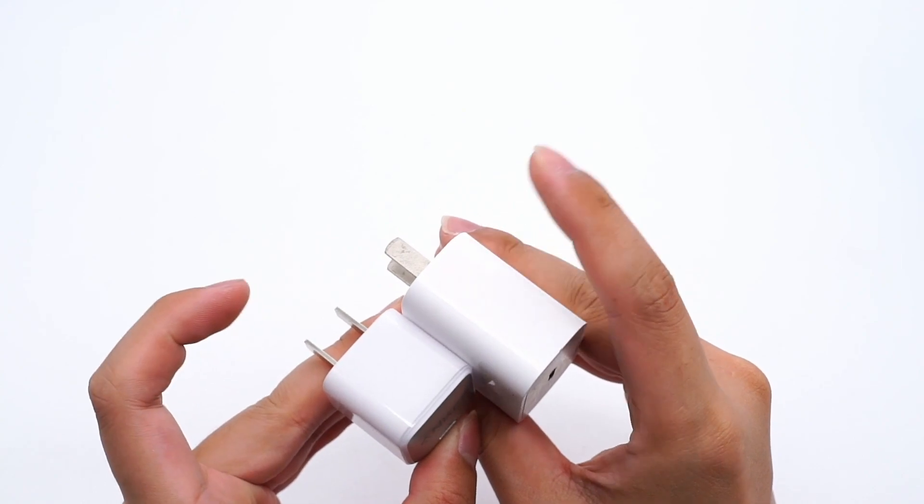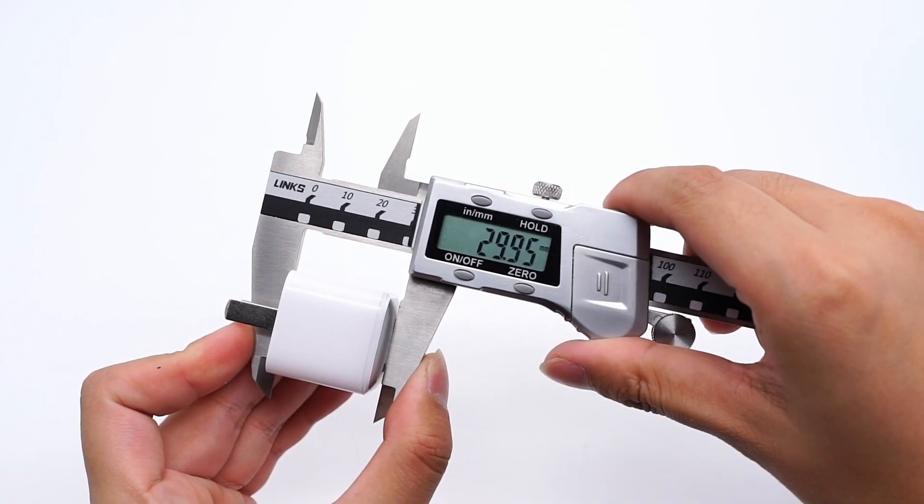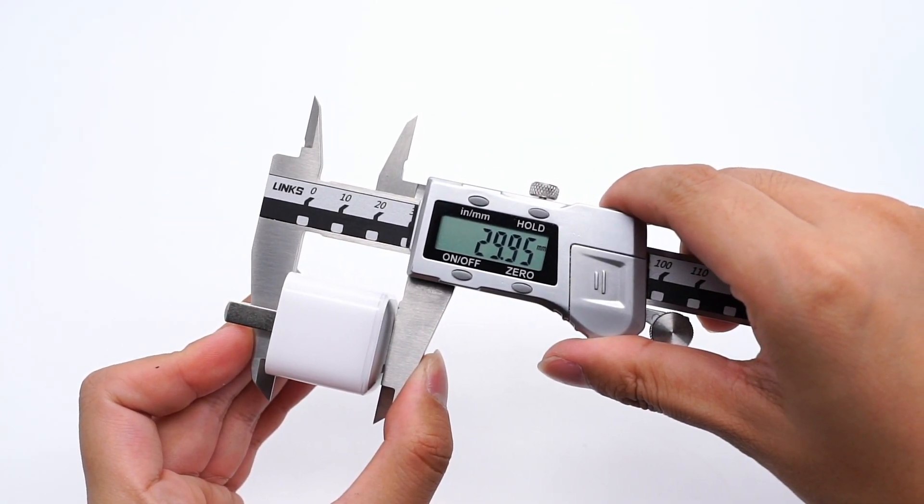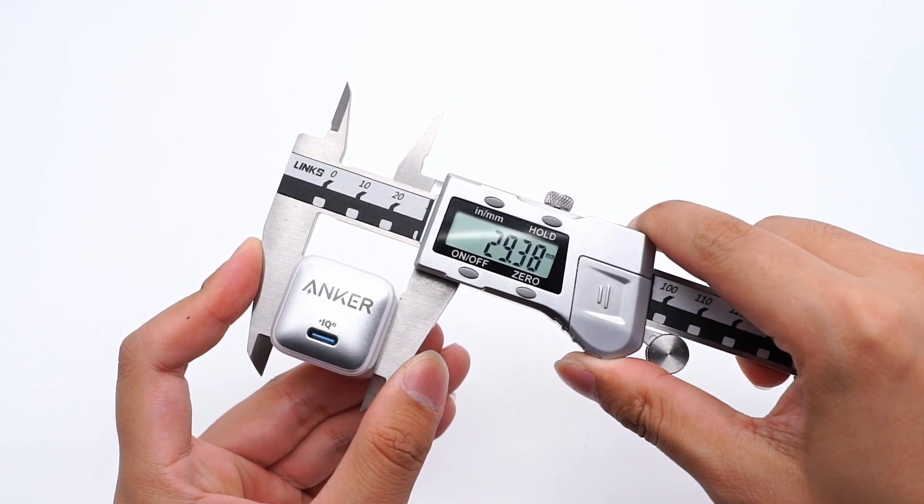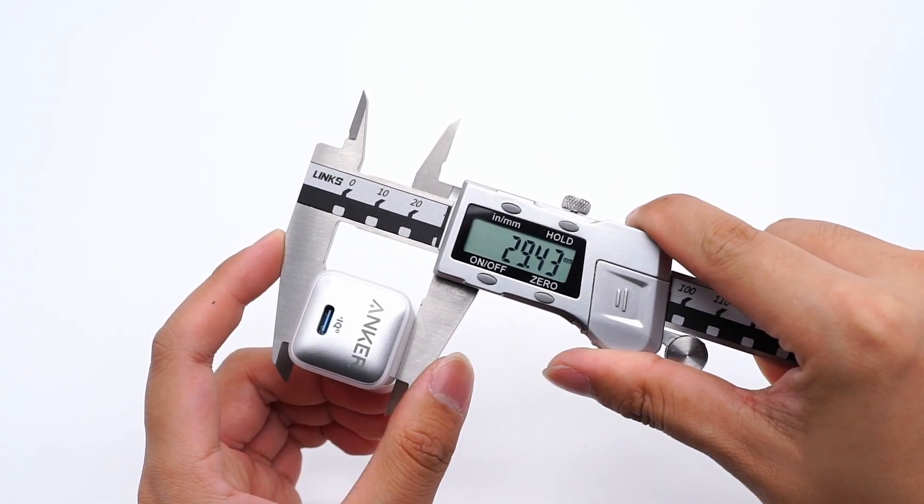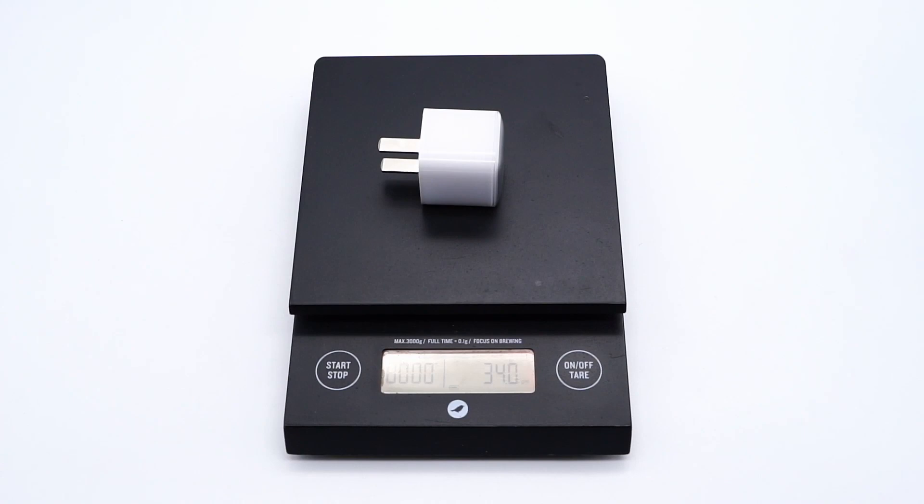Compared with Apple 20W, we can see it's obviously smaller. The length is about 29.95mm, width is 29.38mm, thickness is 29mm, weight is about 34g.